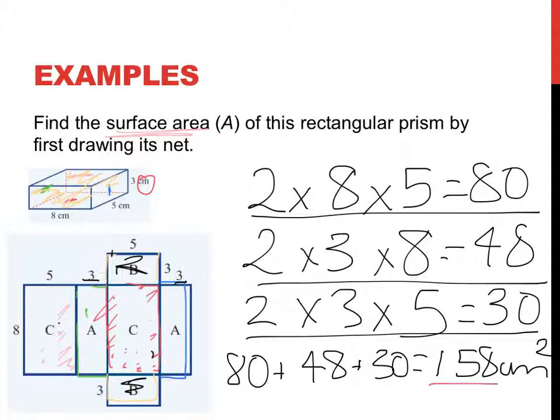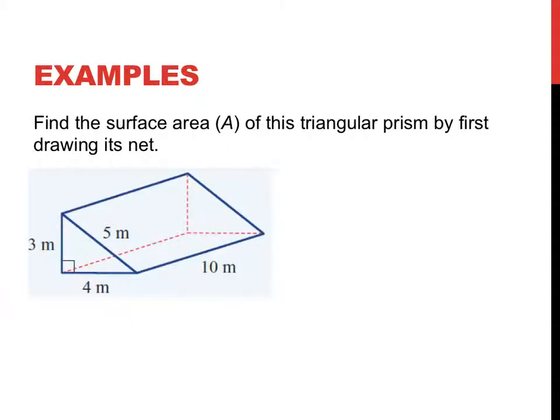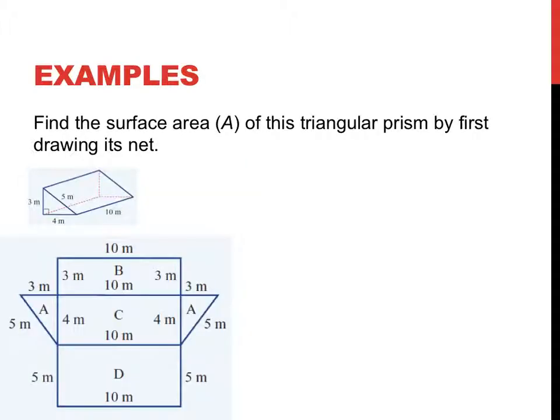Let's have a look at the next example. The next example is a slightly different shape, it's a triangular prism and it says find the surface area by first drawing a net. Interesting things to note this time is that you have five faces here, so again only being given four measurements, a little bit tricky if I don't draw a net. Here's the net I drew.